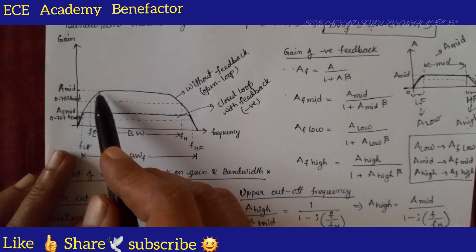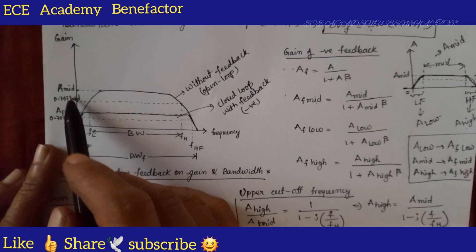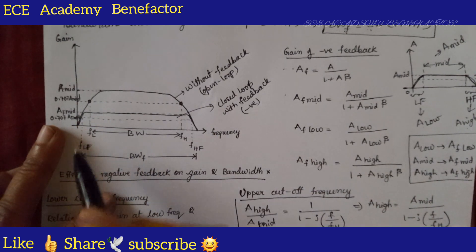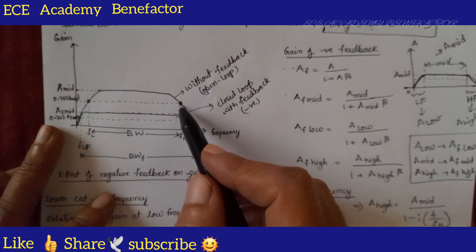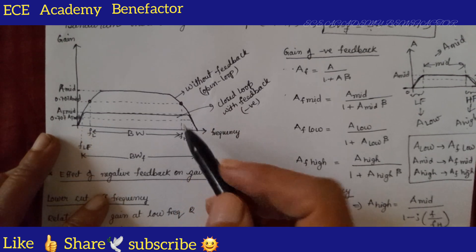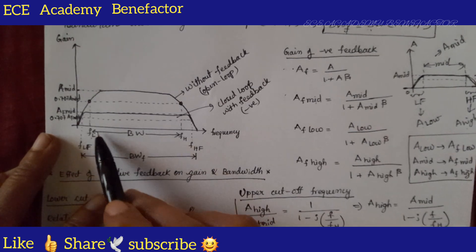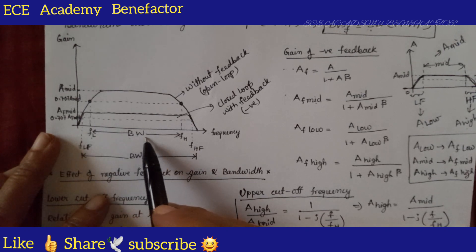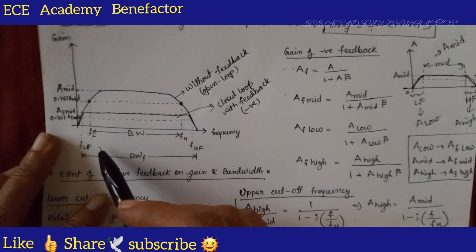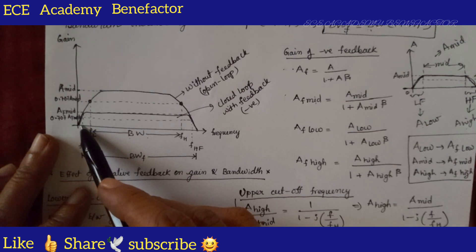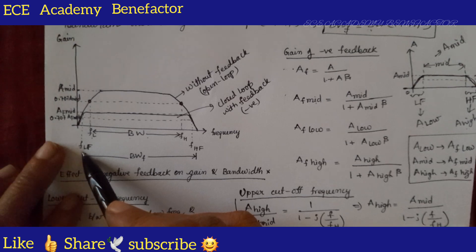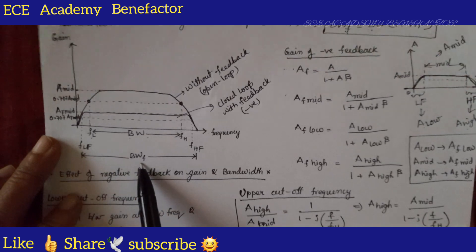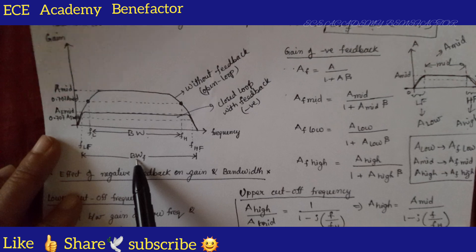In these two graphs, the constant part of gain is represented by A_mid. Taking 1 over root 2 times A_mid, you can locate a specific point. Drawing a line from there gives the lower cutoff frequency FL and the upper cutoff frequency FH. The region between FL and FH is the bandwidth BW, without feedback. After applying negative feedback, FL shifts to a lower level, now called FLf, and FH increases to FHf. The difference between FHf and FLf gives the bandwidth with feedback, showing that bandwidth is increased with negative feedback.